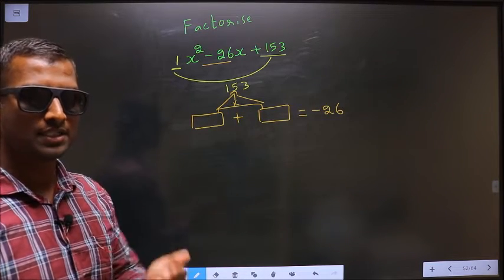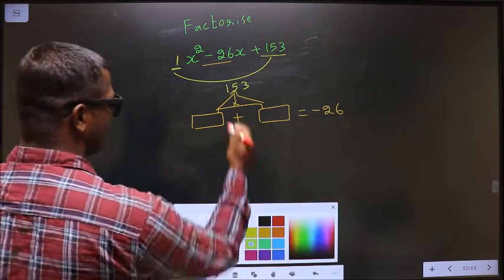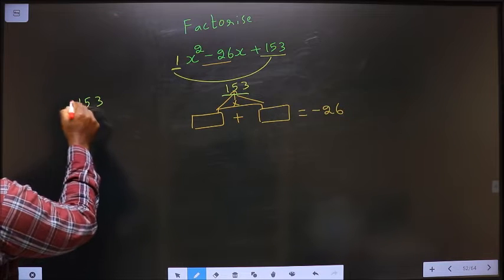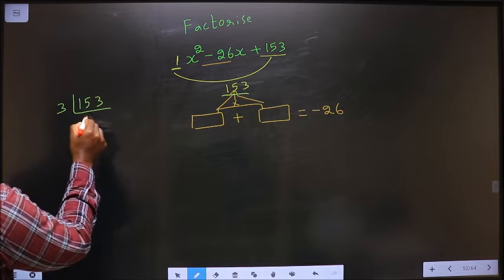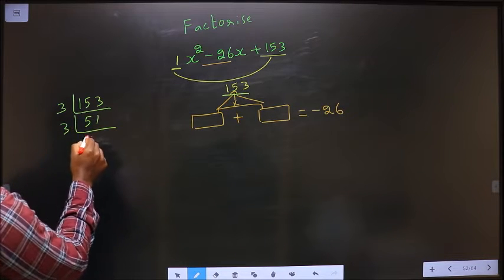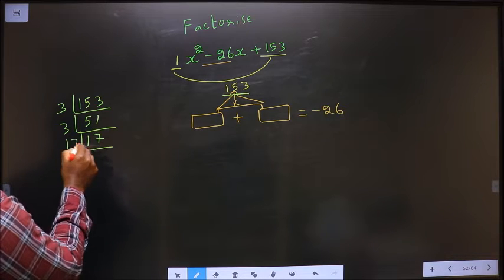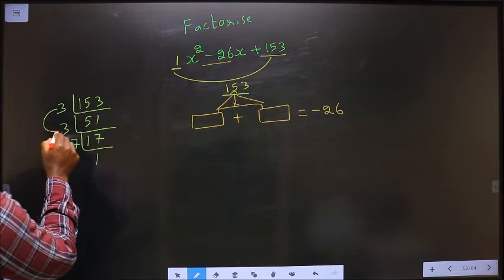So now to get those two numbers, we should take LCM. LCM of 153, starting with 3. 3, 5 is 15. 3, 1 is 3. Again 3. 3, 1 is 3, 7 is 21. Now 17. So now the two numbers are 3 into 3, 9 and 17.